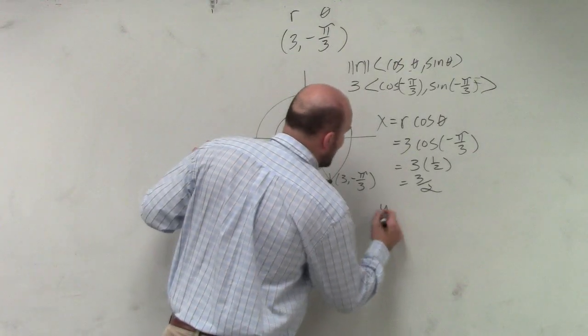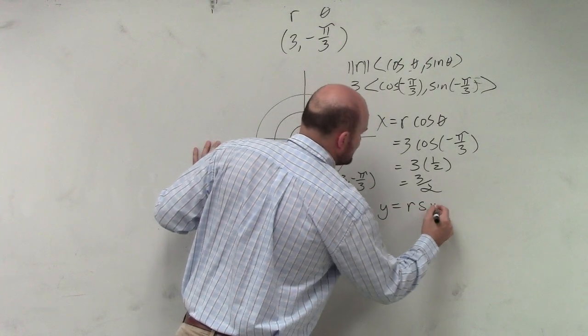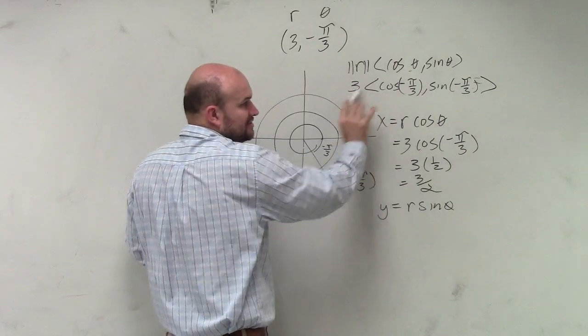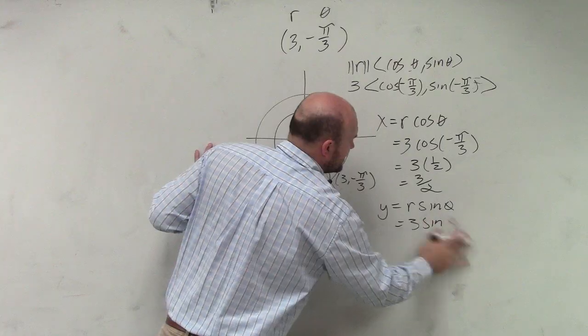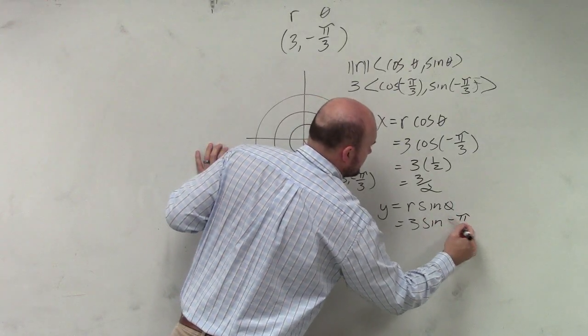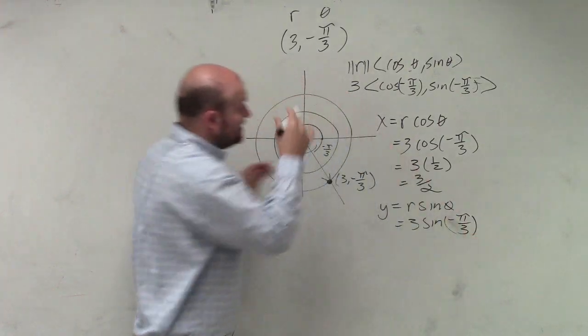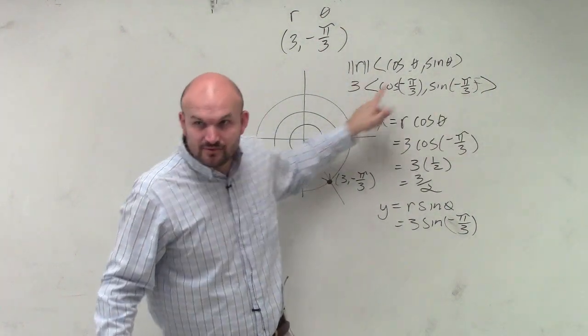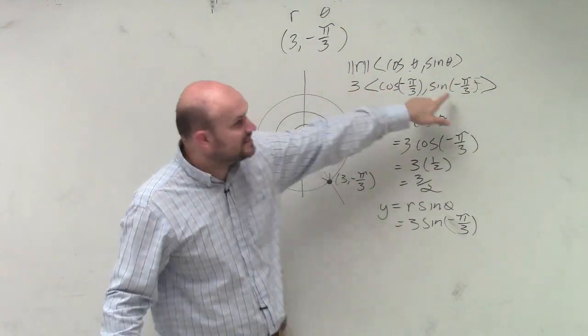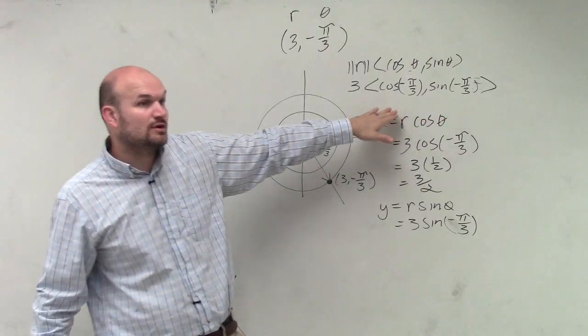Then we do the y, which is r times the sine of theta, right? Because didn't you see? You're just doing what we do, which is 3 times the sine of negative π/3. Right? Isn't that what they're doing to find the y-coordinate of that vector? Yes? That's what we're doing to find the y-coordinate. We're just multiplying 3 times the sine of that. That would give you the y-coordinate of that vector.